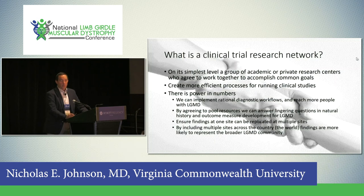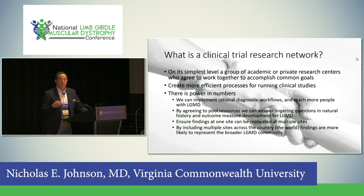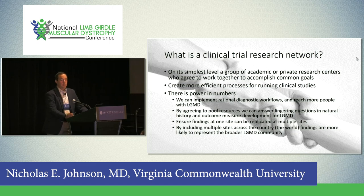That led us to form a clinical trial research network — a group of academic or private research centers who agree to work together to accomplish common goals. This offers a more efficient process for running clinical studies. Because all of us met together and trained on the same outcome measures, we can do multiple studies simultaneously. If we implement rational diagnostic workflows, we can reach more people with limb girdle. We've agreed to pool resources to answer lingering questions in natural history and outcome measure development.